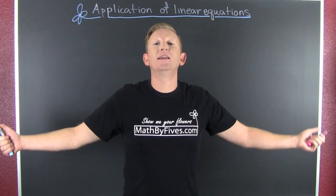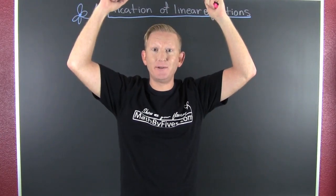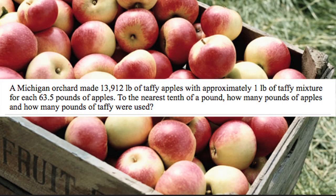An application of linear equations: the taffy apple problem. But first, we need to read the problem. A Michigan orchard made 13,912 pounds of taffy apples with approximately one pound of taffy mixture for each 63.5 pounds of apples. To the nearest tenth of a pound, how many apples and how many pounds of taffy were used?